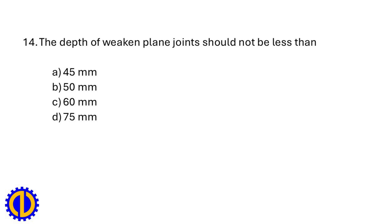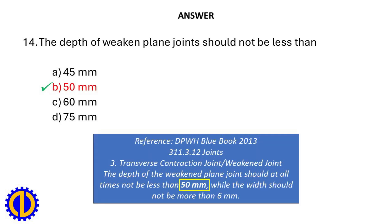The depth of weakened plane joints should not be less than: a. 45 mm, b. 50 mm, c. 60 mm, d. 75 mm. Answer: b. 50 mm. Reference: Blue Book 2013 — the depth of the weakened plane joints should at all times not be less than 50 mm, while the width should not be more than 6 mm.